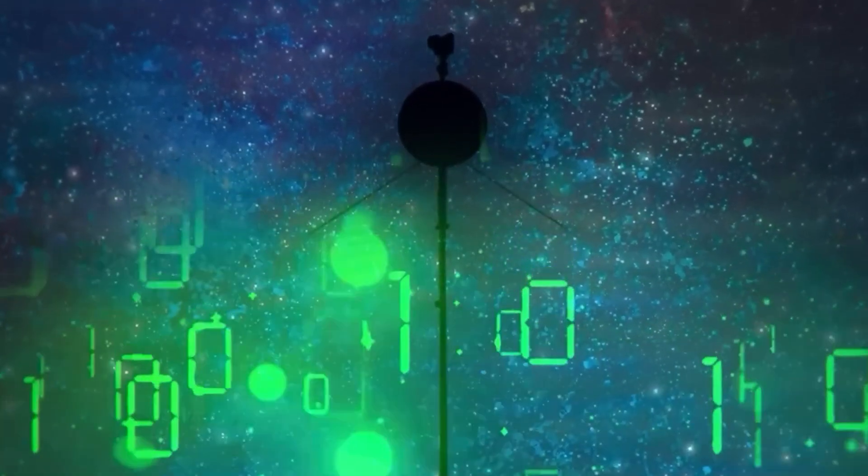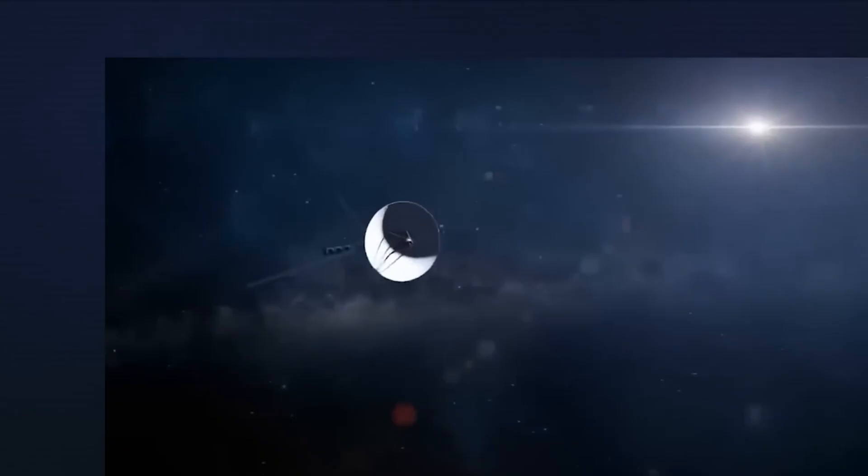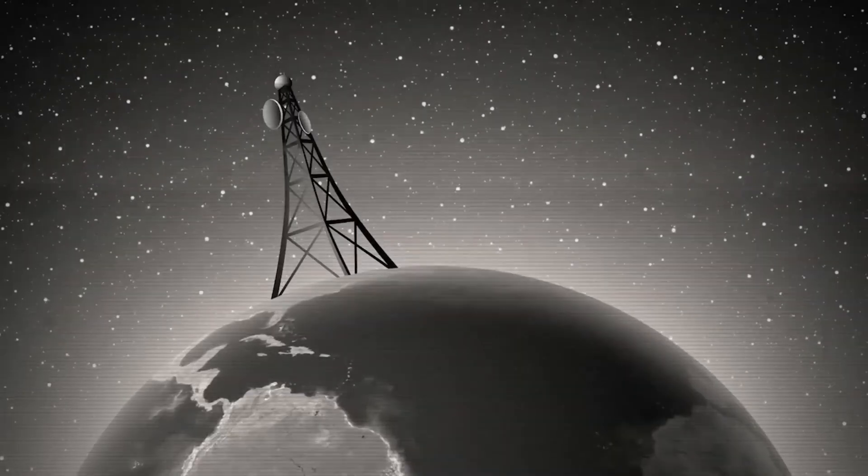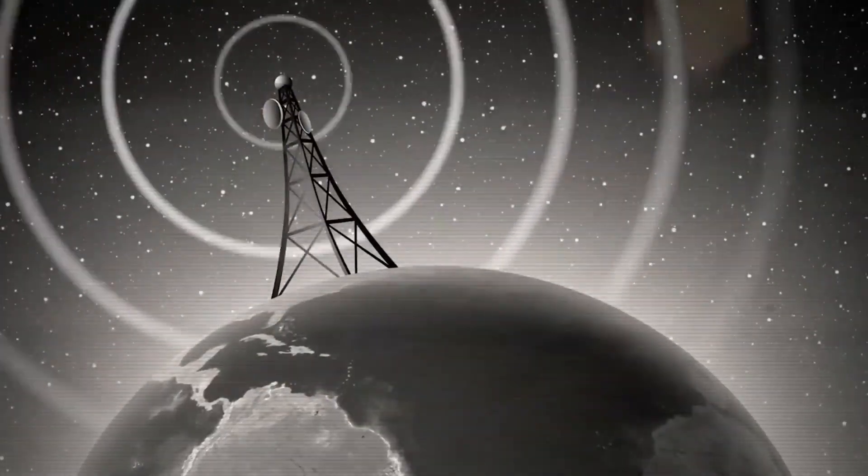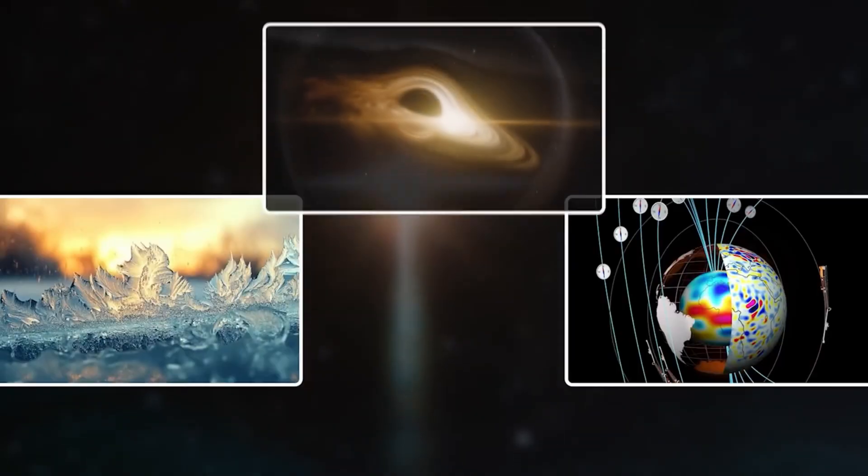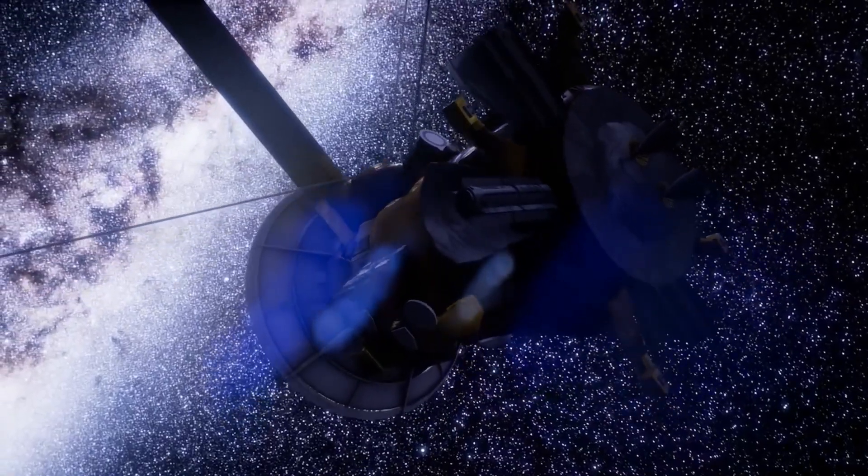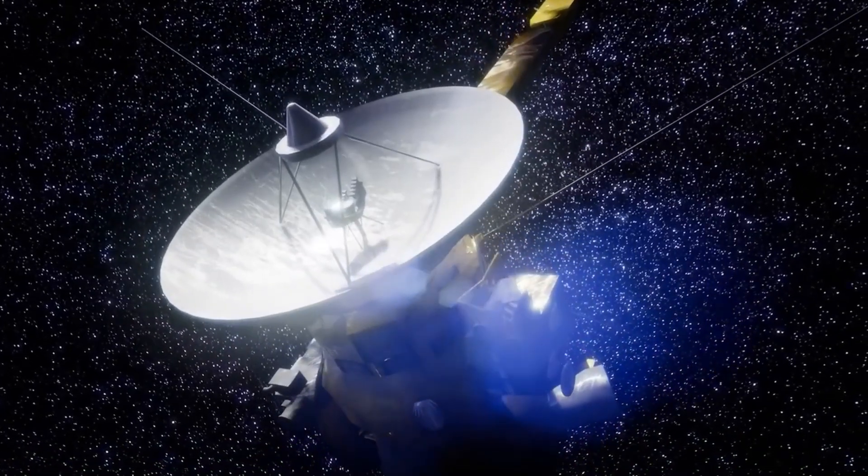But there's more. The path of this anomaly wasn't a straight line. It curved, dipped, and paused, movements consistent with course correction. If it were random turbulence, it wouldn't show such refined behavior. Some researchers are now theorizing that Voyager might have crossed through a field, an area in space that reacts to its presence. Think of it as a cosmic sensor field where entering it activates something else, a trigger. If that's the case, then Voyager didn't just observe something strange, it may have activated it. And that thought alone has astronomers both thrilled and terrified.